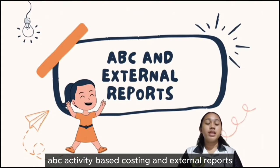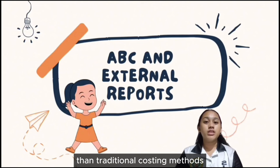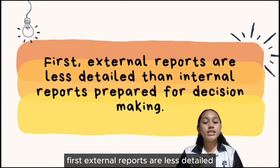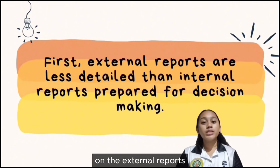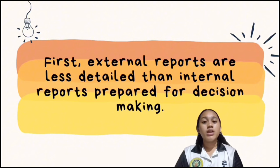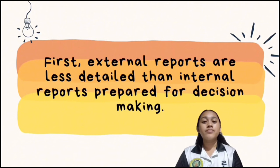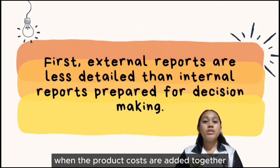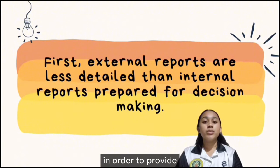ABC and External Reports: Although Activity-Based Costing generally provides more accurate product costs than traditional costing methods, it is infrequently used for external reports for several reasons. First, external reports are less detailed than internal reports prepared for decision-making — on external reports, individual product costs are not reported; only cost of goods sold and inventory valuations are disclosed. If some products are under-costed and some are over-costed, the errors tend to offset each other when product costs are added together.